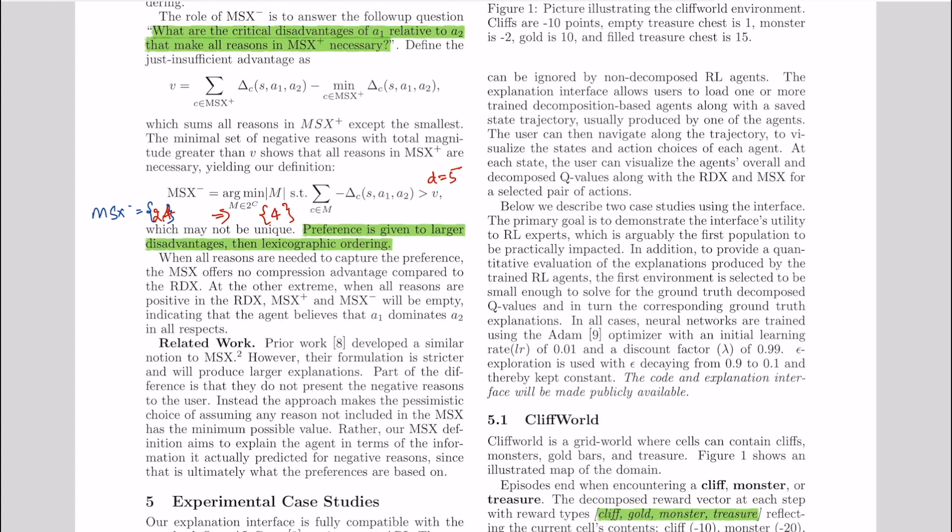Now let's call this value from the MSX minus set as V. Now what we need to do is we need to sum up all the disadvantages and get the minimum set again but that set should barely cross this value V. Now this new set that we would get is exactly MSX minus. Now although all of this is interesting, MSX plus and minus are just a way of utilizing the knowledge about decomposed components contributing towards the selection of an action.